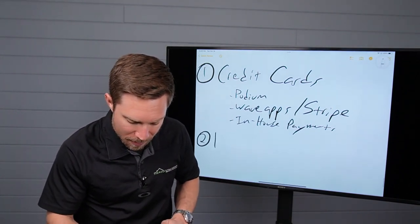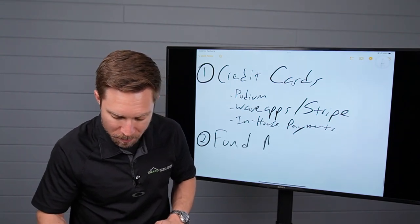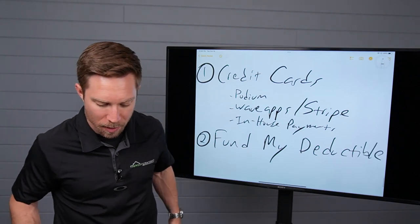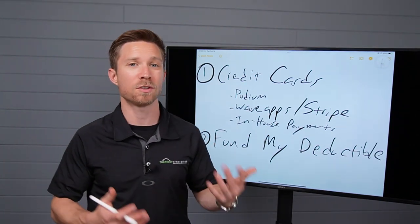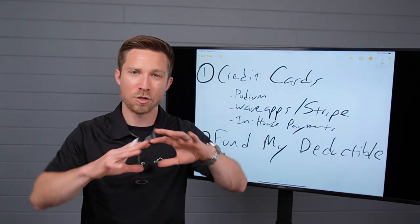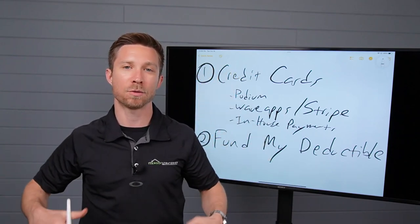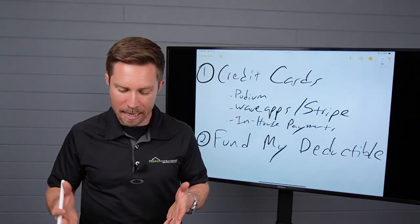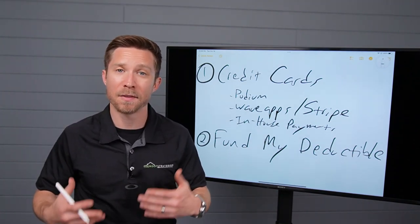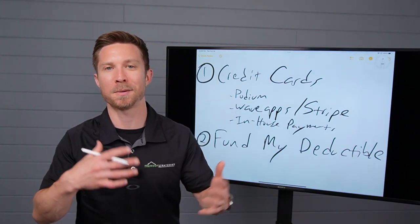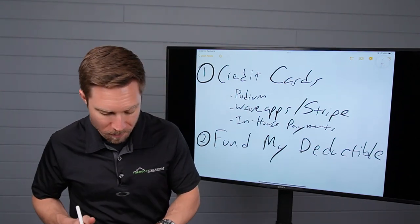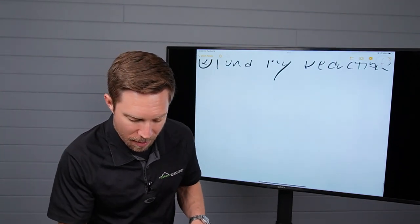All right. Option number two is a company, and they don't even know I'm doing this video, by the way, is Fund My Deductible, FMD. And Fund My Deductible, I'm going to let their website do the talking. You can reach out to them, but they are an organization set up to basically offer the in-home financing option, but they do all of the tracking and all of that. So it's just kind of a done-for-you process. I interviewed Ryan, by the way, on the channel. So if you search deductible, the roof strategist, you'll probably see us chatting there. So a really good resource to take a look at is Fund My Deductible.